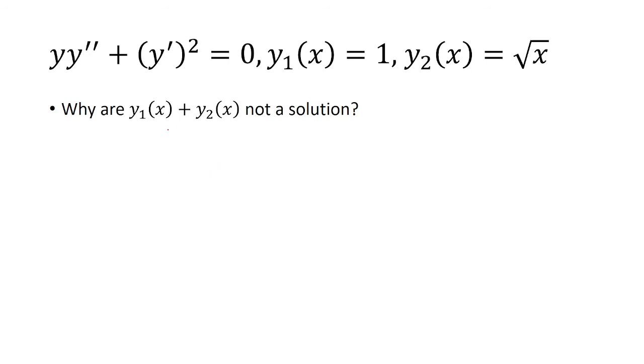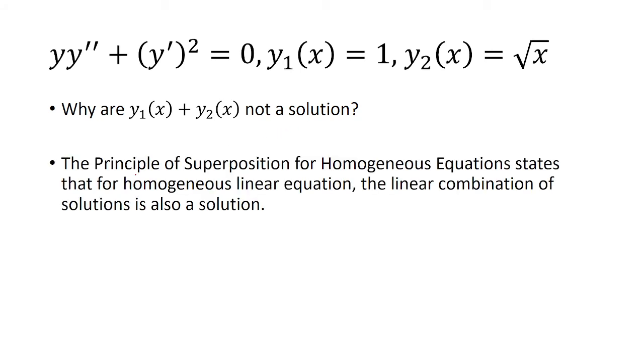Now I want to see why are y sub 1 of x plus y sub 2 of x not a solution. So for this, I'm going to use the principle of superposition for homogeneous equations. So that states that for homogeneous linear equation, this is homogeneous because it's equal to 0, but it's not linear because we have a square here. So this is not linear.